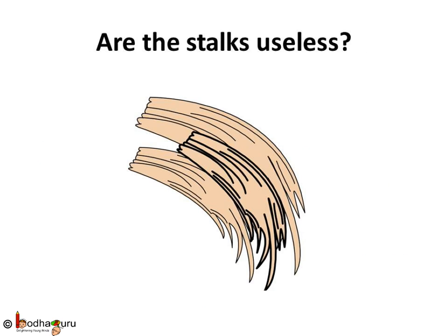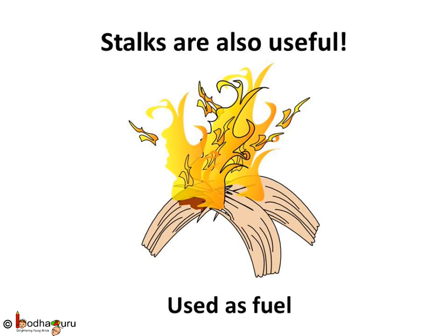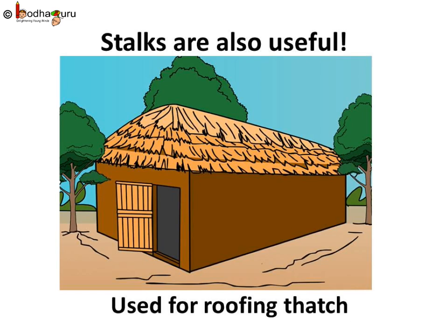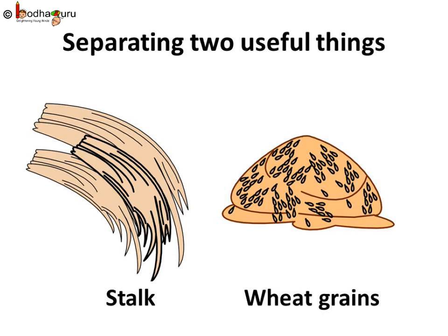What do farmers do with the wheat stalks after separating the grains? The stalk has many uses — it can be used as fuel, fed to animals as roughage, and is also used to make the thatched or sloping roofs of kaccha houses. So separation can also be used to separate two useful things, since the stalk and wheat kernels are used for different purposes.